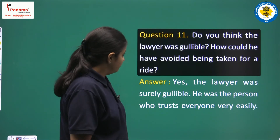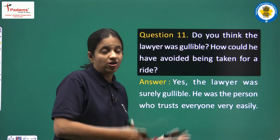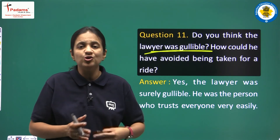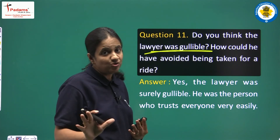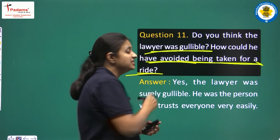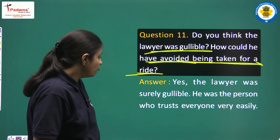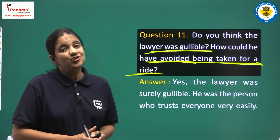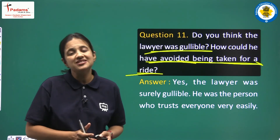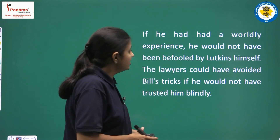Question 10: Was the lawyer gullible? How could he have avoided being taken for a ride? 'Gullible' means a person who can be very easily deceived or cheated. Yes, the lawyer was surely gullible — he was someone who trusted everyone very easily and gave his confidence too readily. We have to also discuss how he could have avoided being cheated.